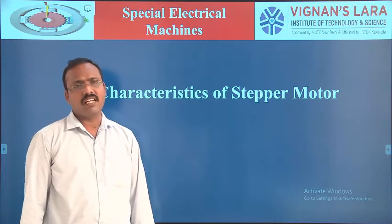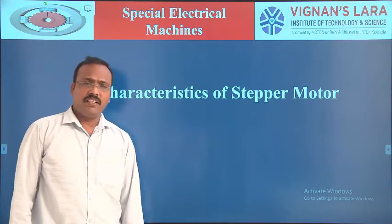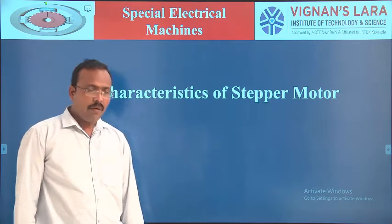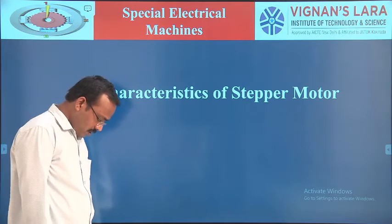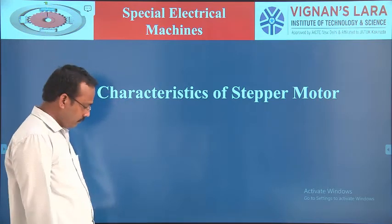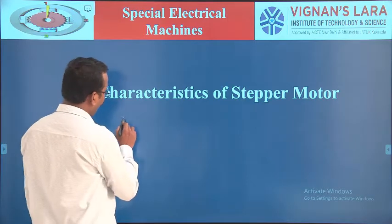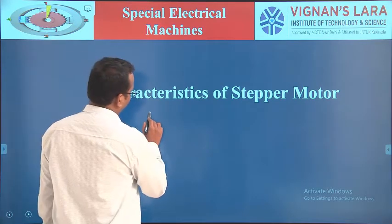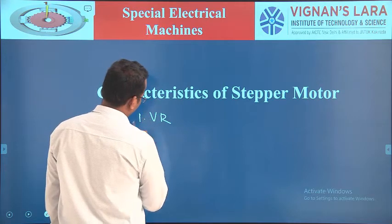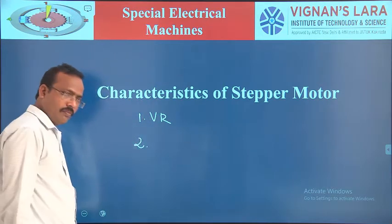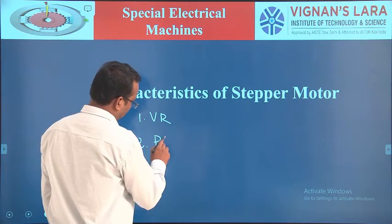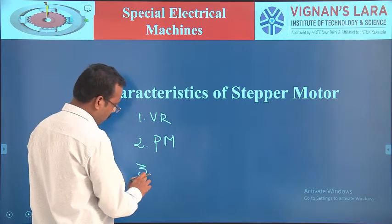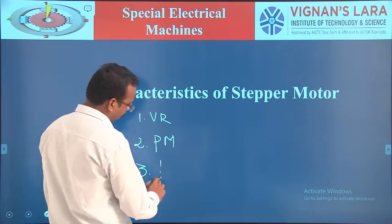We also discussed H-bridge type phase switching winding with stepper motor. So we have basically three kinds of stepper motor: one is variable reluctance (VR) stepper motor, second one is permanent magnet stepper motor, and third one is hybrid stepper motor.